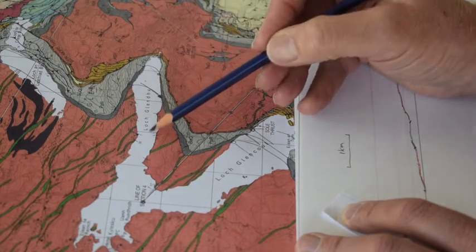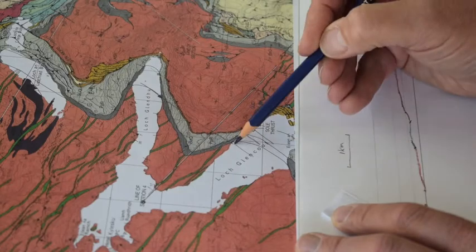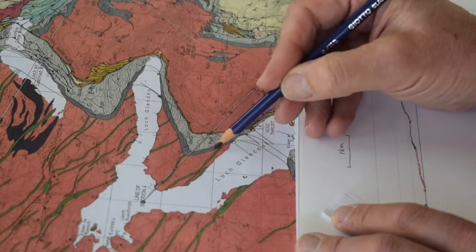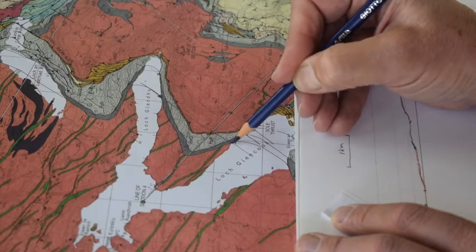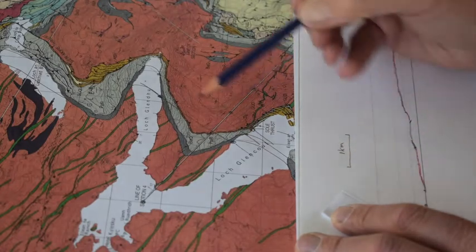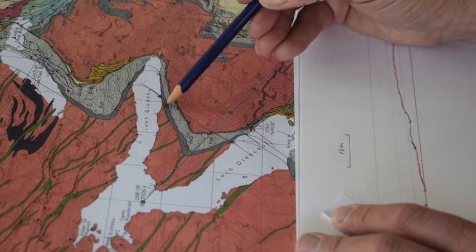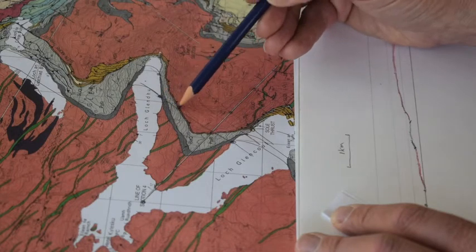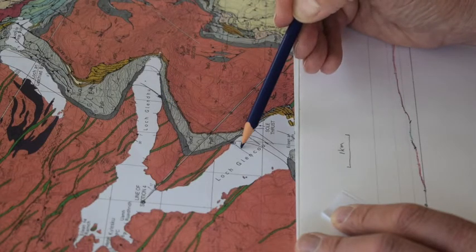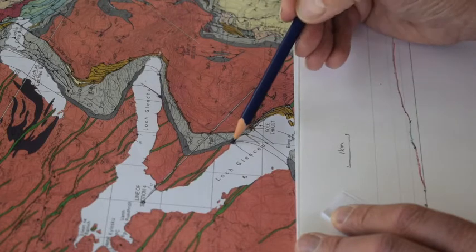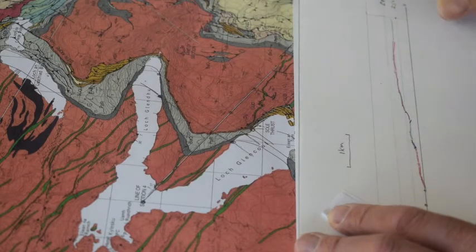What I've found is where the base of the lower quartzite comes down to the water's edge at sea level there. And I found the equivalent place on the other side of this peninsula here, where the base of the quartzite comes down against the water's edge. And joining these up is a structure contour where the base of the quartzite is at zero meters at sea level. So I can take that and use it to help me draw the cross section.